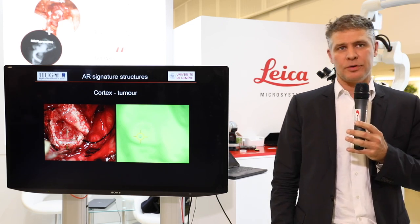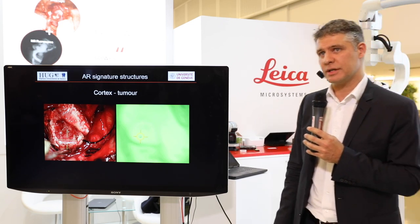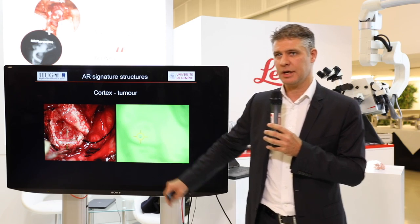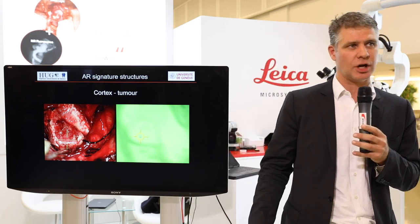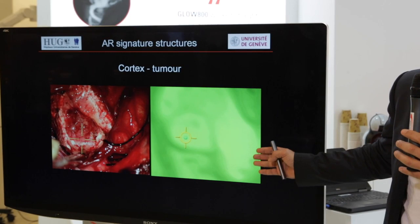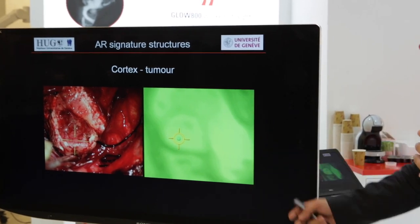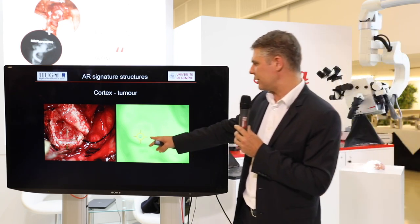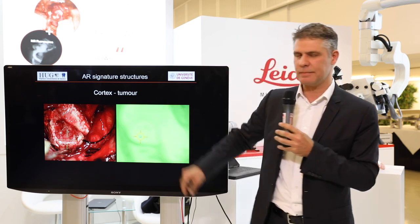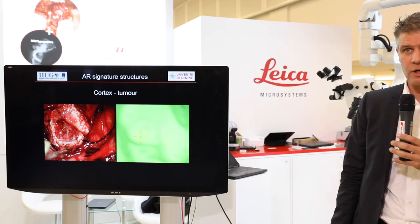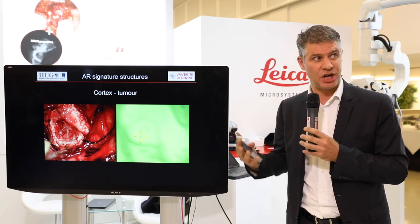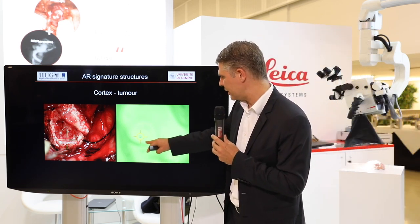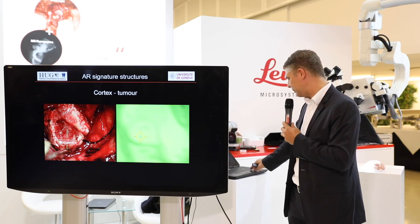When you open the brain, you face the cortex, white matter, and maybe the tumor. There are differences in gray shades which are very similar to what you see on T2 images or on different types of imaging. This shape is very similar to what you see in the operating field, and you can use those characteristic shapes to re-register at the millimetric level. Here there is the cortex and some tumor, and you can map those two things together.